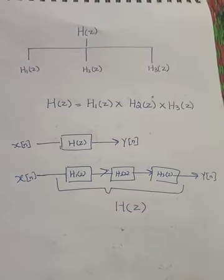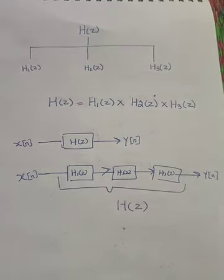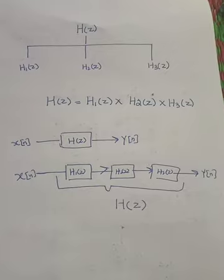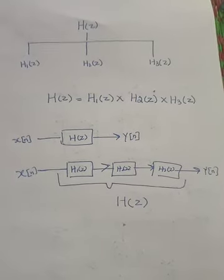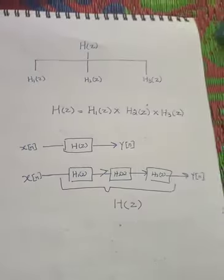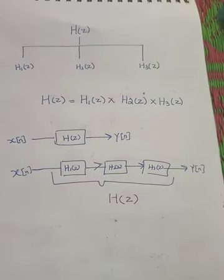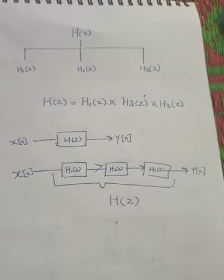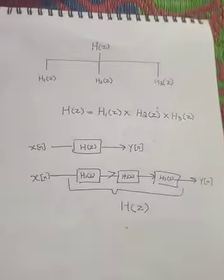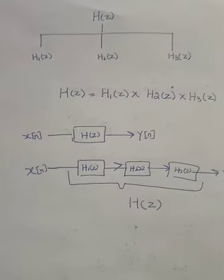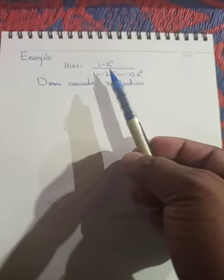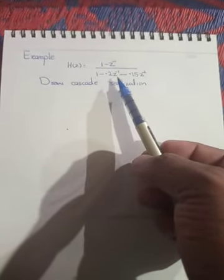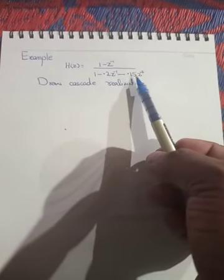This type of realization is called cascaded system realization, and the subsystems will be drawn using either direct form 1 or direct form 2 realization. Now let's move toward an example on cascaded realization.